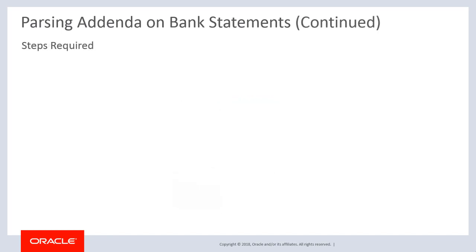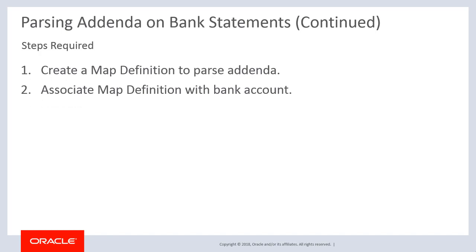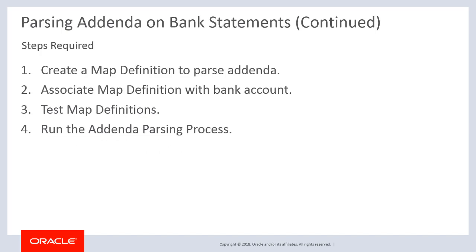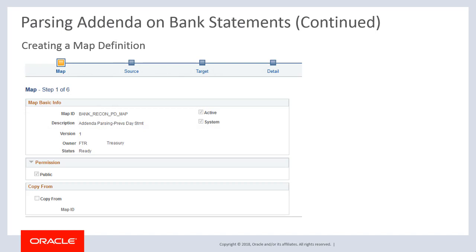To extract information from bank statement addenda for reconciliation purposes: create a map definition to parse addenda, associate the map definition with a bank account, test map definitions, then run the addenda parsing process. Create a map definition using the Data Export Import Utility Map Definition component, which includes guided steps for map, source, target, detail, and filter definitions.